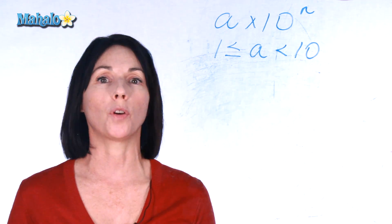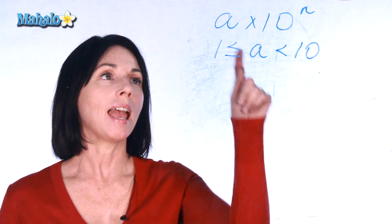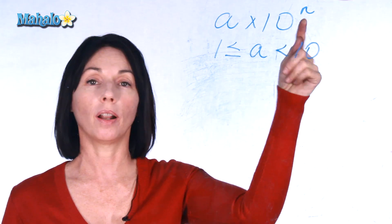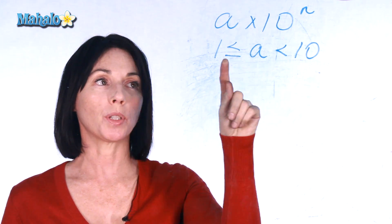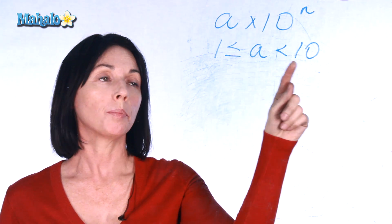Now, this is the general form of a number in scientific notation: a times ten to the power of n. And a is supposed to be greater than or equal to one, but less than ten.